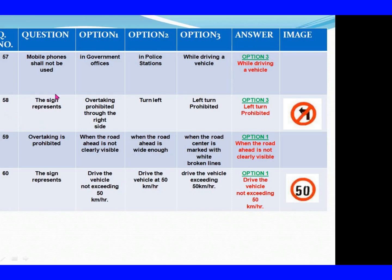Question 58: The sign represents. Option 1: Overtaking prohibited through the right side. Option 2: Turn left. Option 3: Left hand curve prohibited. Question 59: Overtaking prohibited. Option 1: When the road ahead is not clearly visible. Option 2: When the road ahead is wide enough. Option 3: When the road center is marked with wide broken lines. The right answer is Option 1: When the road ahead is not clearly visible.